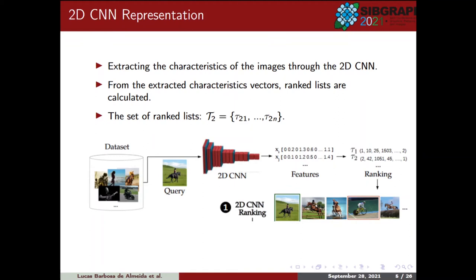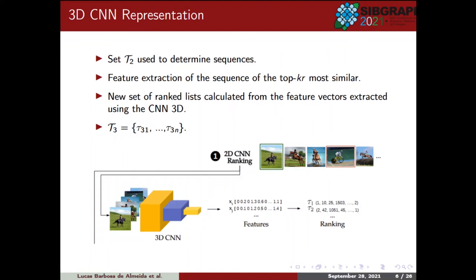The 2D representation is done by directly extracting the characteristics of the image through the 2D CNN. From the extracted feature vectors, ranked lists are computed — lists in which, for a given query element, the most similar elements in the dataset are ranked. The set of all these ranked lists is denoted by tau2. The set tau2 is then used to determine a sequence of frames, where given an element q of the dataset, the sequence is composed of the most similar top k nearest images and the query image q. This sequence is fed into the 3D CNN module, so that instead of considering temporal information, the similarity relation of the neighbourhoods of image q is used. The new set of ranked lists, computed from the feature vectors extracted using the 3D CNN on the composite representation of the query image and its neighbourhoods, is denoted tau3.